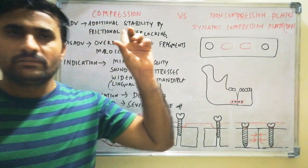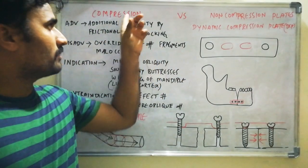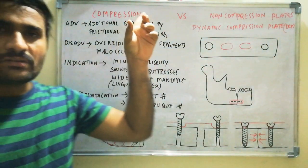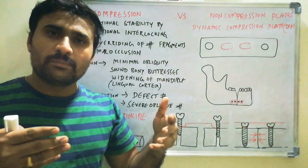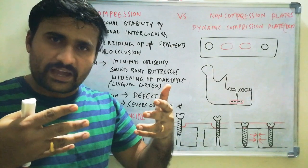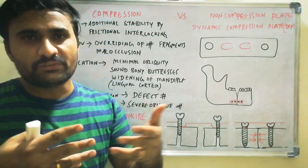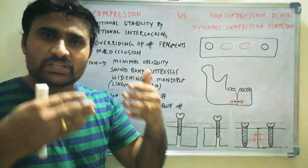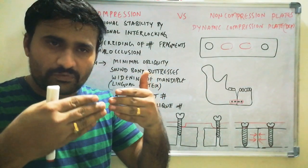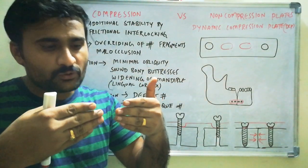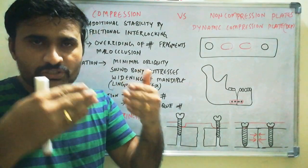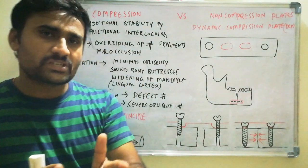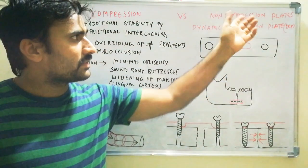In this video, we will discuss compression plates and non-compression plates. Compression plates have the ability to compress the fractured fragments after plate fixation. Whereas non-compression plates just hold the fractured fragments in line — they do not compress. We generally use non-compression plates, that is mini plates or reconstruction plates; all come under non-compression plates.